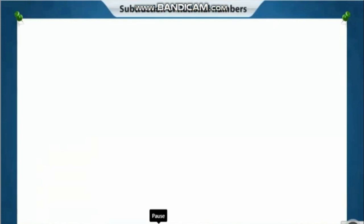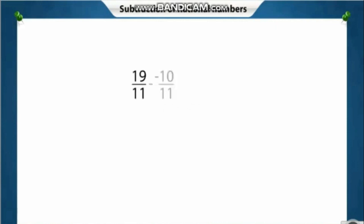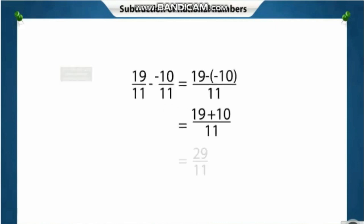Next, let's find the difference between two rational numbers. Here the denominators are the same — it is a like fraction. Find the difference between the numerators.